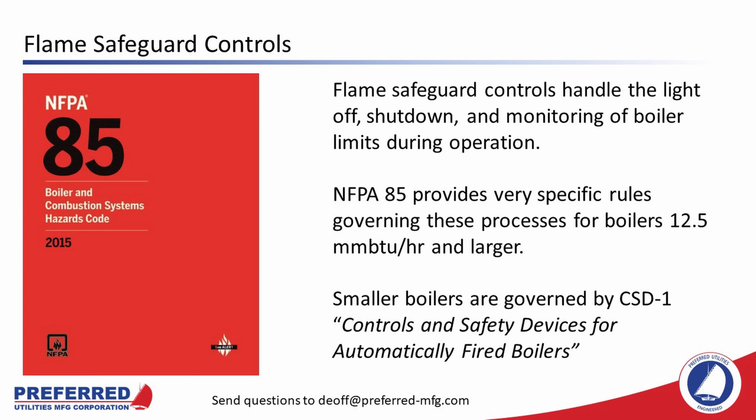The first part of boiler control we're going to cover is flame safeguard controls. The flame safeguard system lights off, shuts down, and monitors the boiler for safe operation while it is running. It monitors boiler limits such as high steam pressure switches, low water cutouts, fuel pressure switches, and flame scanner inputs to ensure the boiler is running safely.